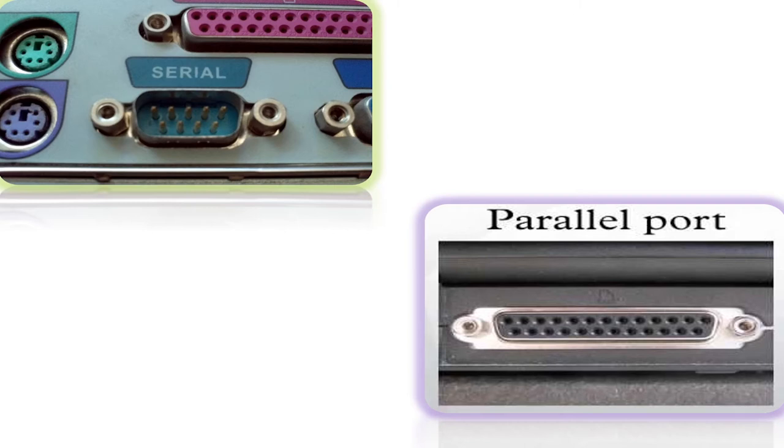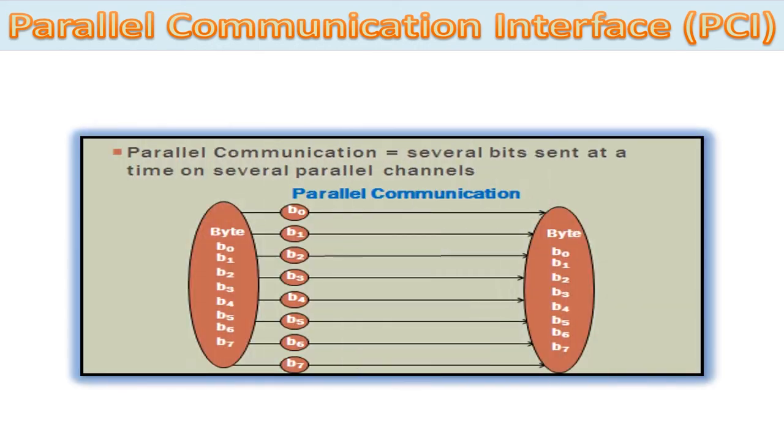Parallel input-output port or parallel communication interface, PCI. Parallel interface can be explained in a better way with the help of some examples. When the processor sends some data bytes to a printer or device connected via parallel port, it sends one byte or 8 bits of data at a time.